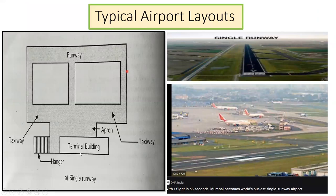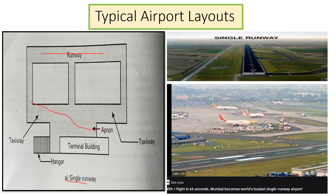Now coming to the typical airport layouts. The first one is a single runway. You can see it here — there is only one runway, then this is the taxiway, this is the terminal building, and this is the apron. From the apron through the taxiway the aircraft will go, and from here the takeoff is going to happen. This is a hangar here. With one flight every 65 seconds, Mumbai is the world's busiest single runway airport — so it is an example of a single runway airport.